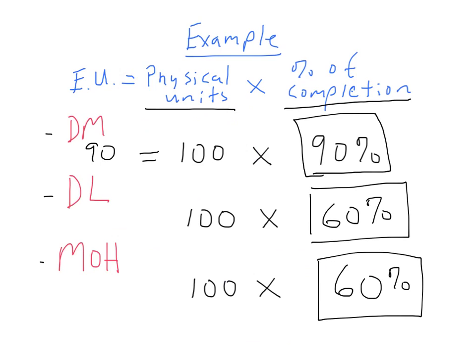60 percent times 100 gives us 60 equivalent units for direct labor, and then we will have the same for manufacturing overhead at 60 percent times 100.